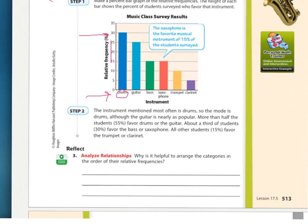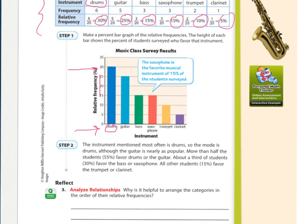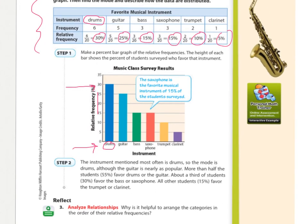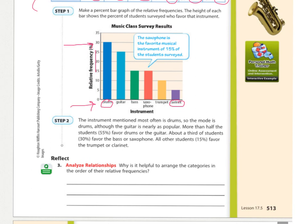Number three says: Why is it helpful to arrange the categories in the order of their relative frequencies? So that's what they did here on this one. They said the one with the highest relative frequency is going to be first, and the one with the lowest is going to be last. The clarinet, that's what I played when I was in band. I didn't like it. I like the sound now, but at the time I didn't like it.